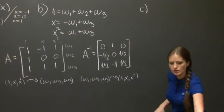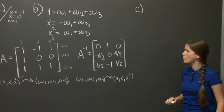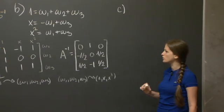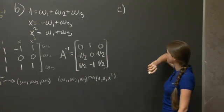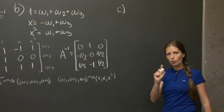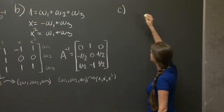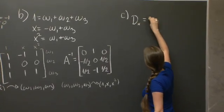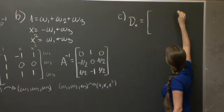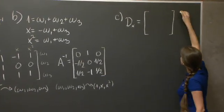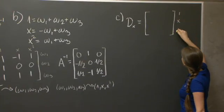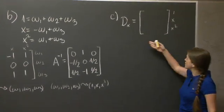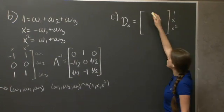Let's go on to the c part. The c part required us to find the matrix of taking derivatives, which is a linear map in the space of polynomials, in both of these bases. So let's first do the 1, x, x squared basis, because that one's easier. I'm going to call it dx.